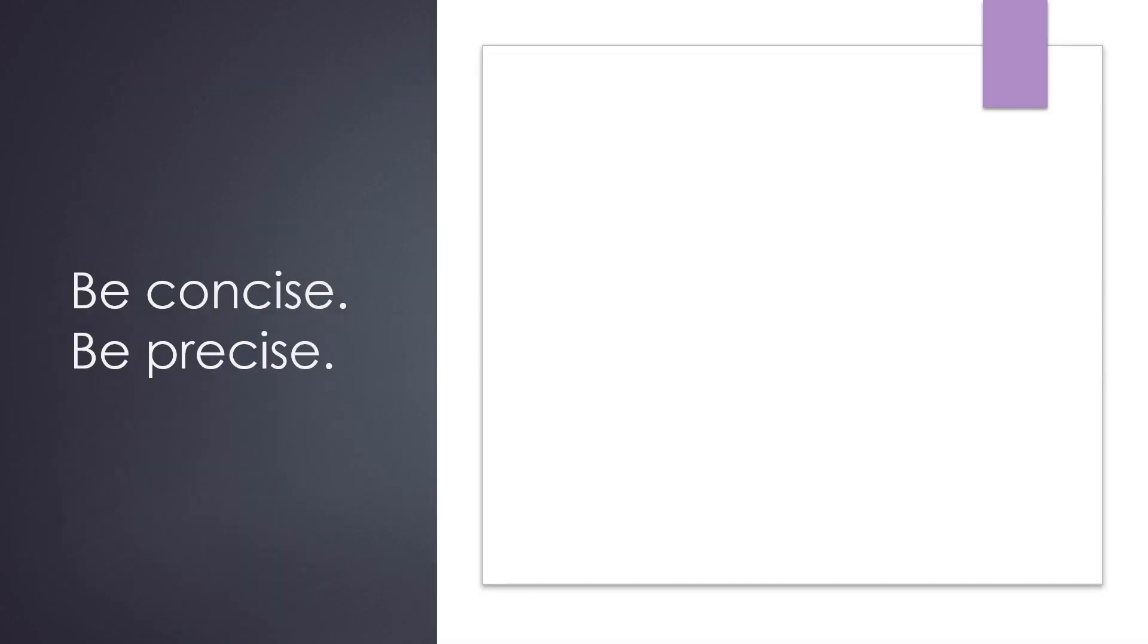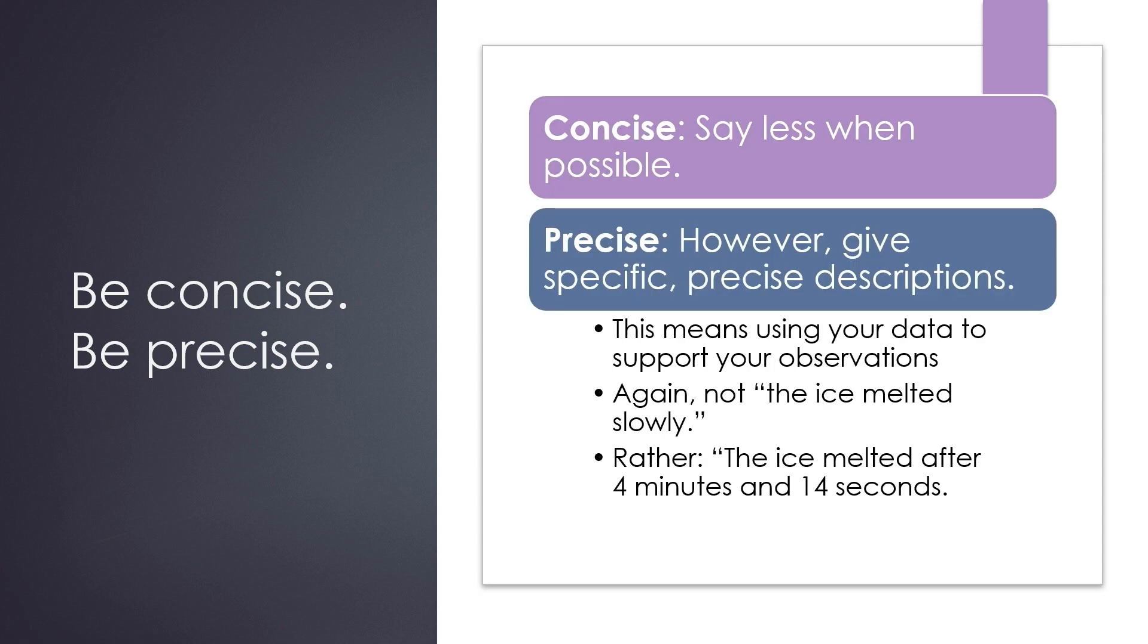The best scientific writing strikes a balance between being concise or brief and being precise, meaning it includes the necessary specific descriptions, such as the numeric data collected during the experiment. Again, you don't want to say the ice melted slowly. That is not precise. Rather, you want to give the exact amount of time it took for the ice to melt. But you want to say it concisely using as few words as possible.